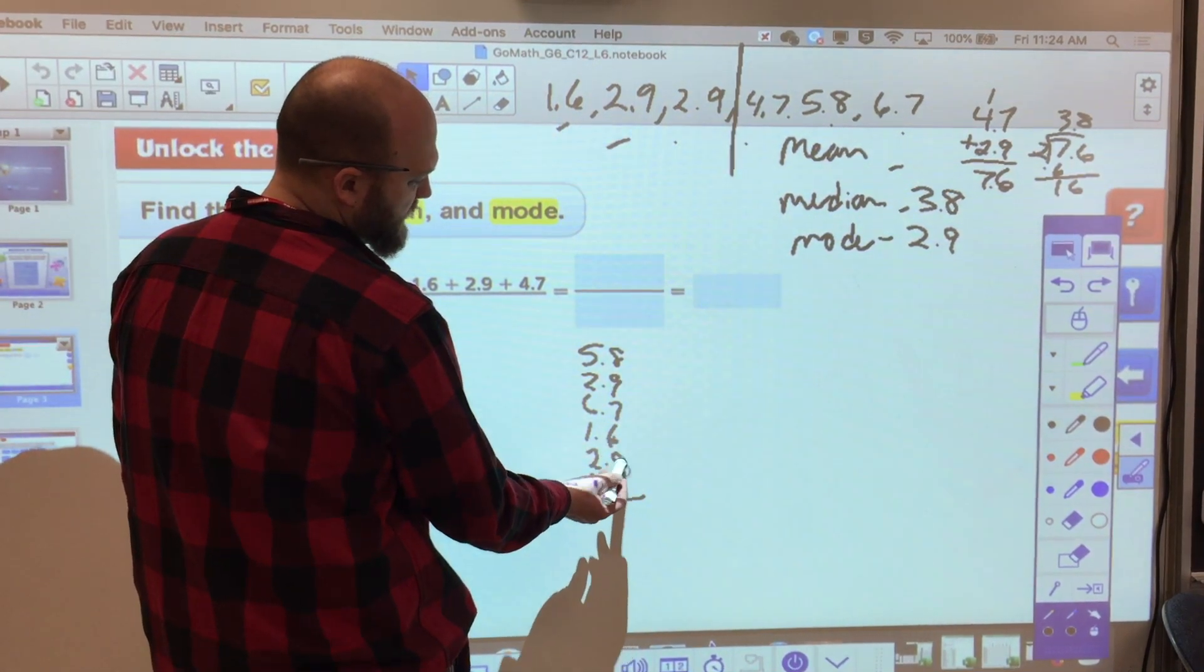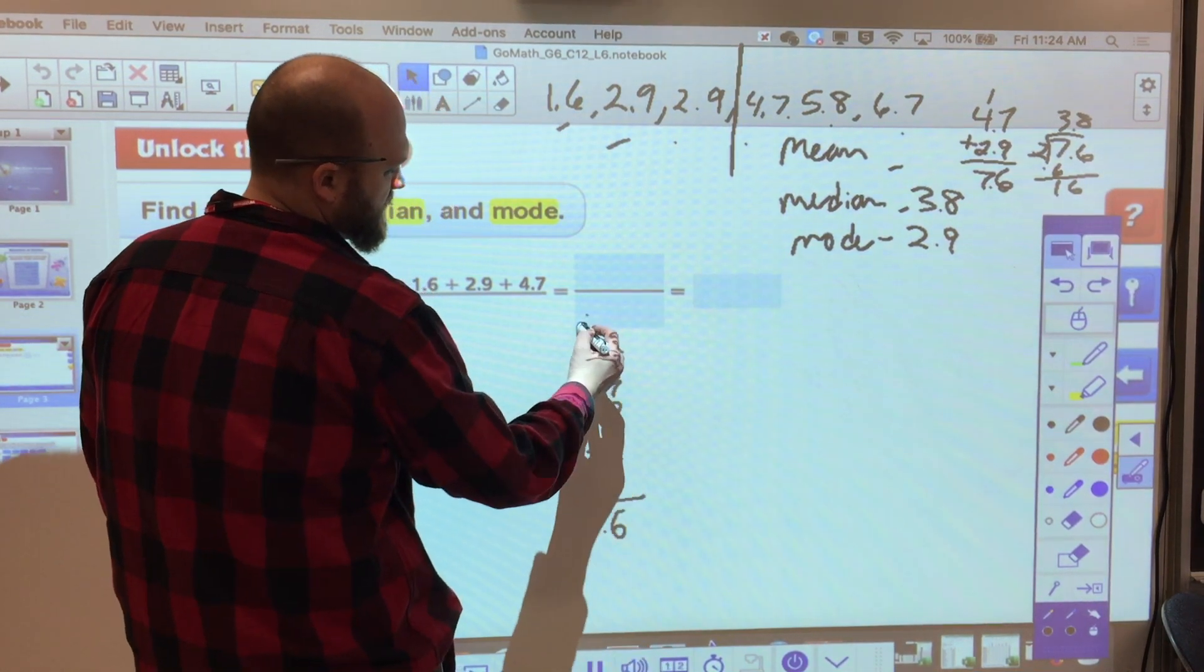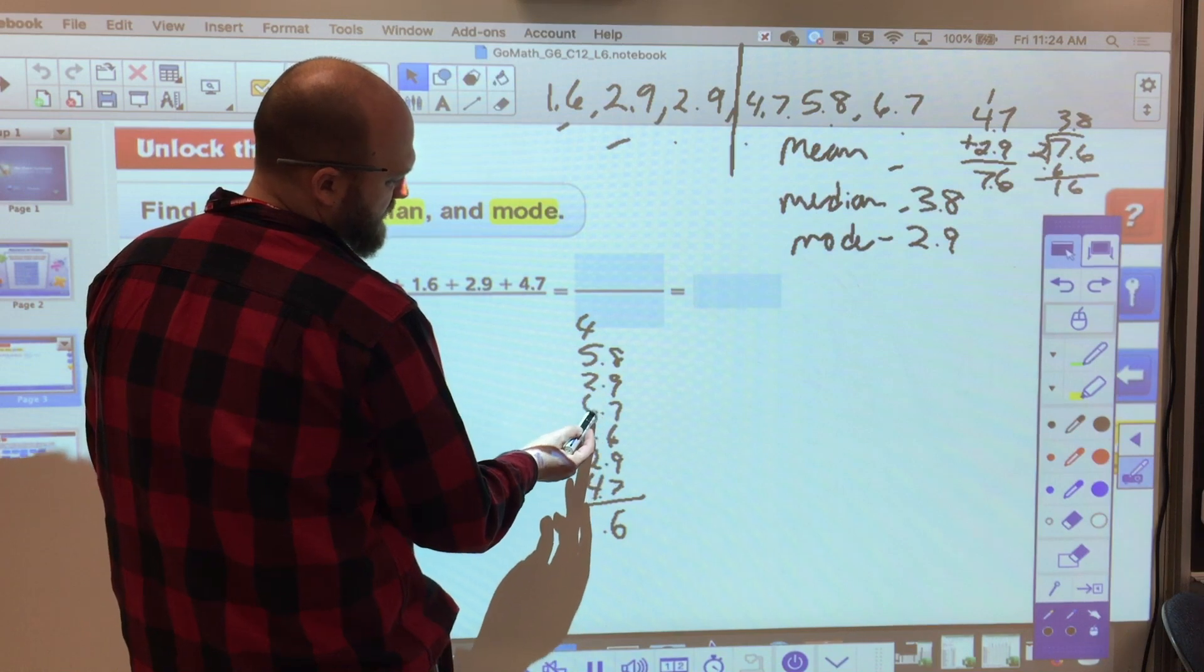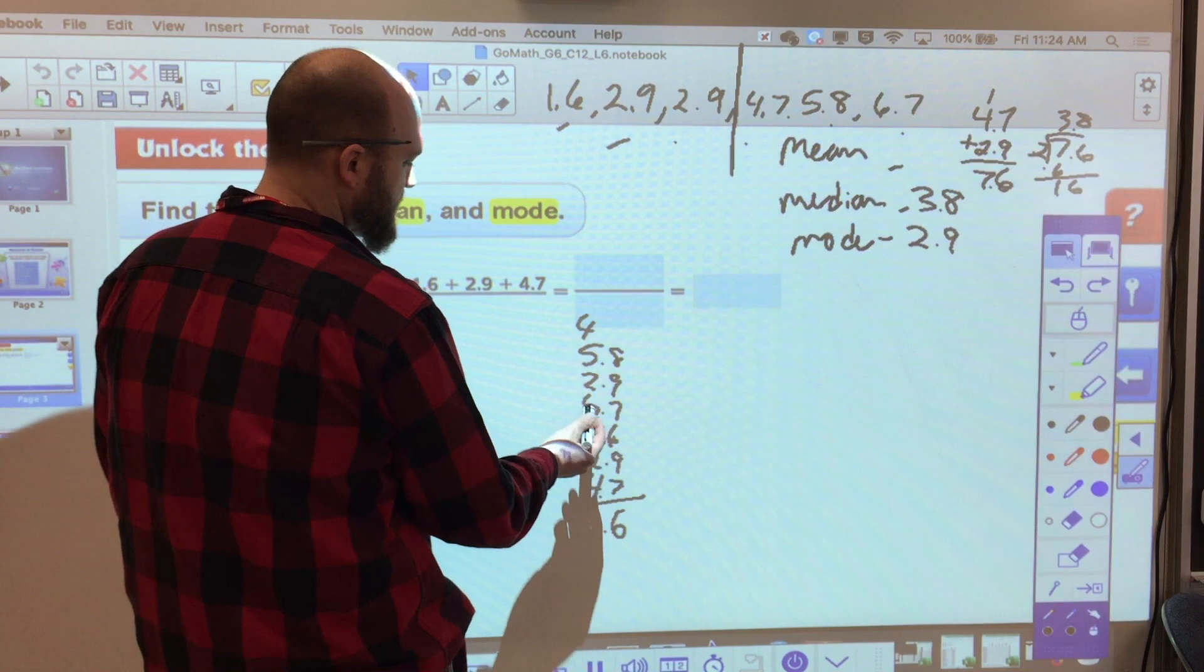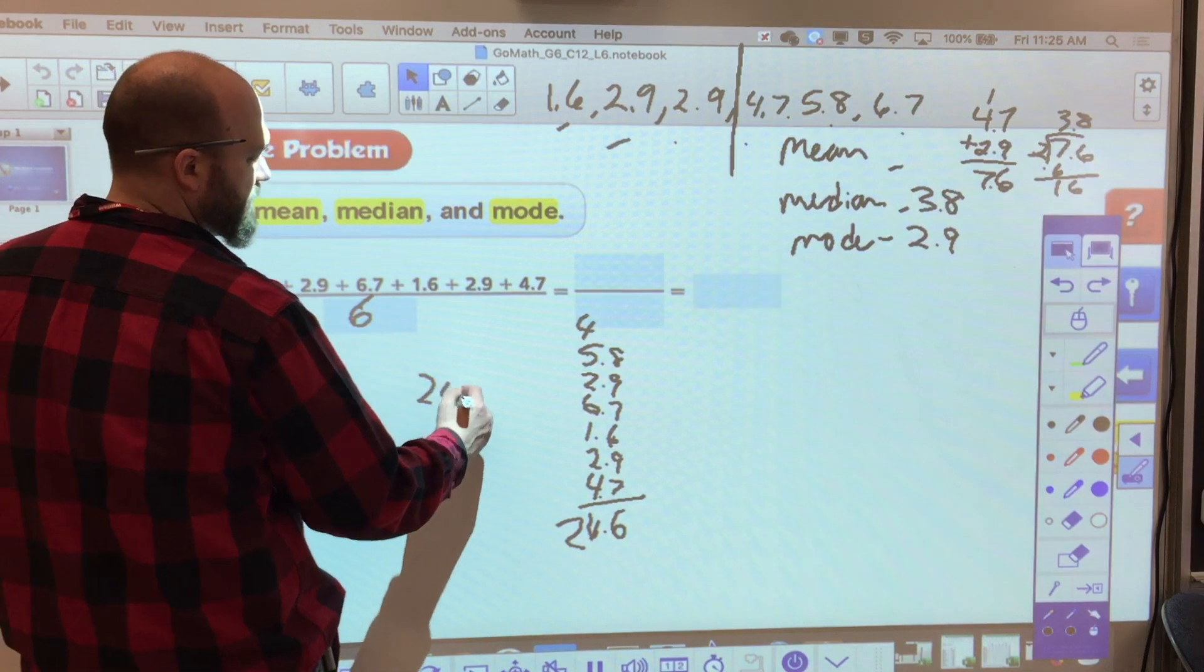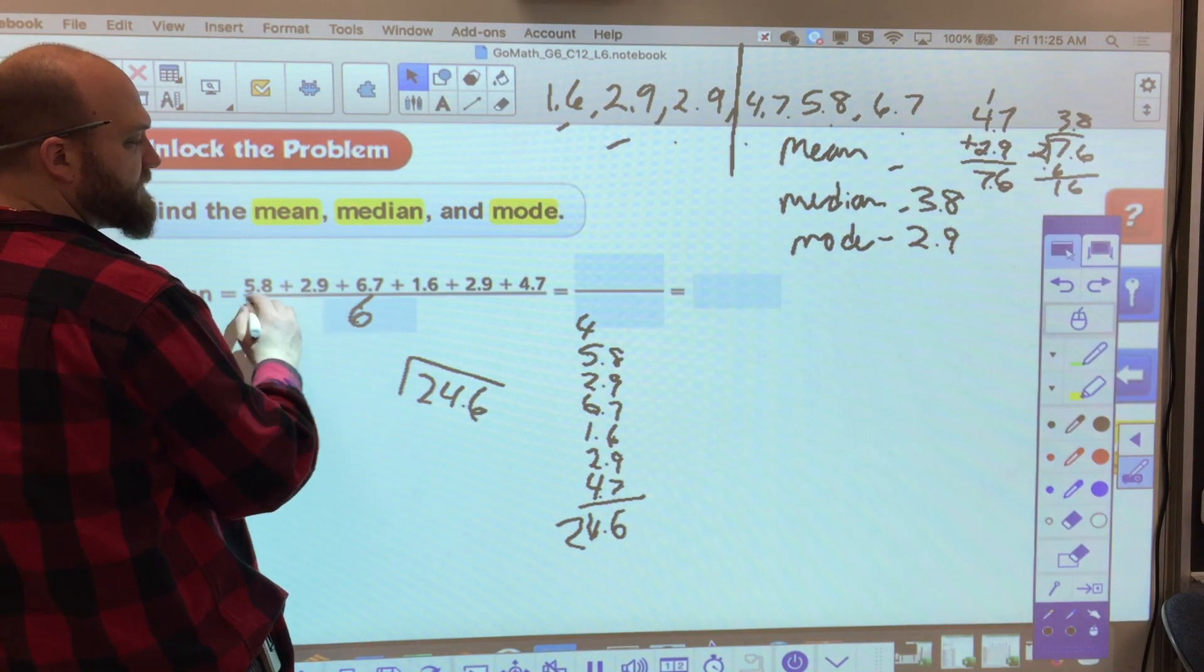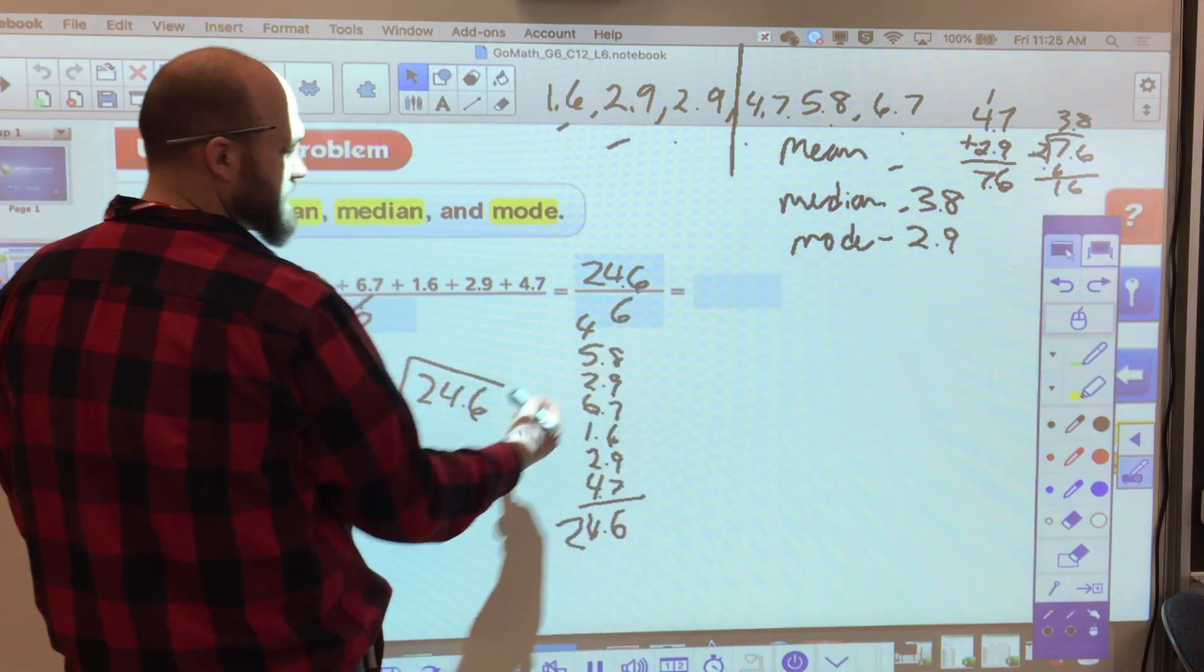So when I add these together, I get 14, 20, 38, 46, and 24.6. So I take my 24.6 and I divide it by how many data points I have. 24.6 divided by 6 data points.